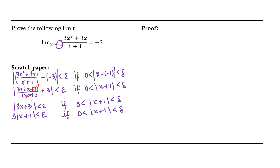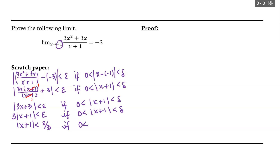Now we're trying to find a condition on delta that will ensure the difference between our function and our limit is less than epsilon. Noticing that I have the absolute value of x plus 1 as part of this simplified form, I can divide by 3 to get the absolute value of x plus 1 is less than epsilon over 3, if 0 is less than the absolute value of x plus 1 is less than delta.